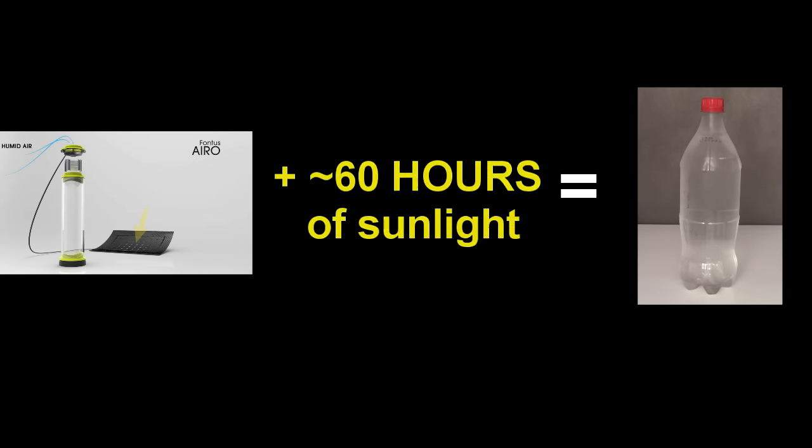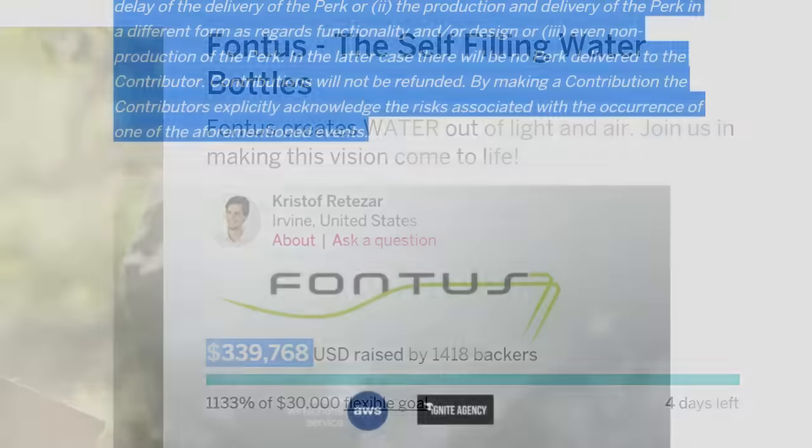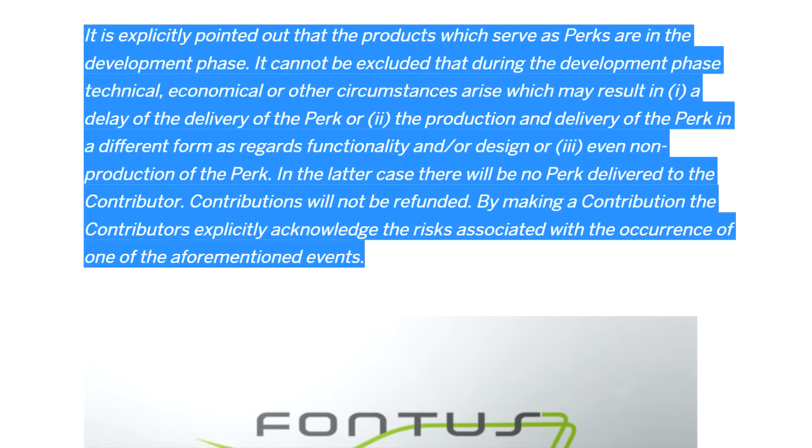Well, it looks like they have every confidence in their project. It's all there on their third of a million dollar crowdfunding page. It is explicitly pointed out that products which serve as perks are in the developmental phase. It cannot be excluded that during the development phase, technical or other circumstances may result in the delay of the delivery of the perk, or the production and delivery of the perk in a different form, or even non-production of the perk. In the latter case, there will be no perk delivered to the contributor. Contributions will not be refunded.